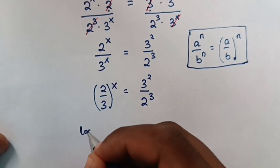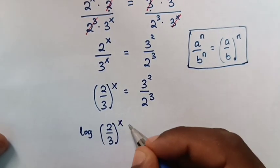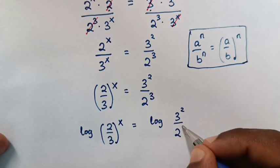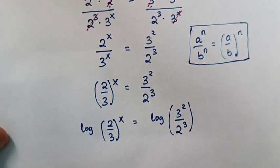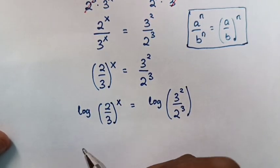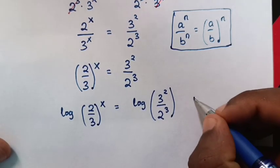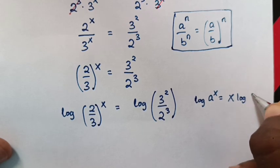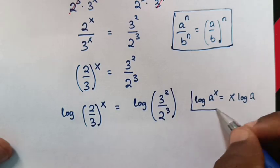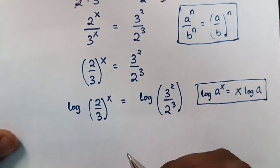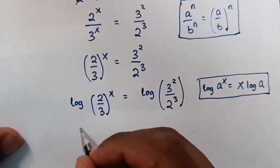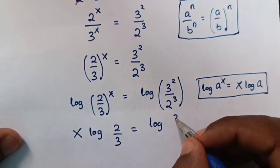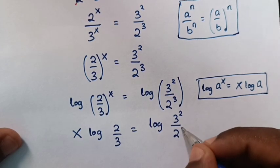So it will be log of (2 over 3) bracket power x is equal to log of 3 squared over 2 power 3. From here we will apply the log rule that log of a power x is equal to x log of a, so this power of x moves to the front. In our equation, x will move here, so it will be x log of (2 over 3) is equal to log of 3 power 2 over 2 power 3.